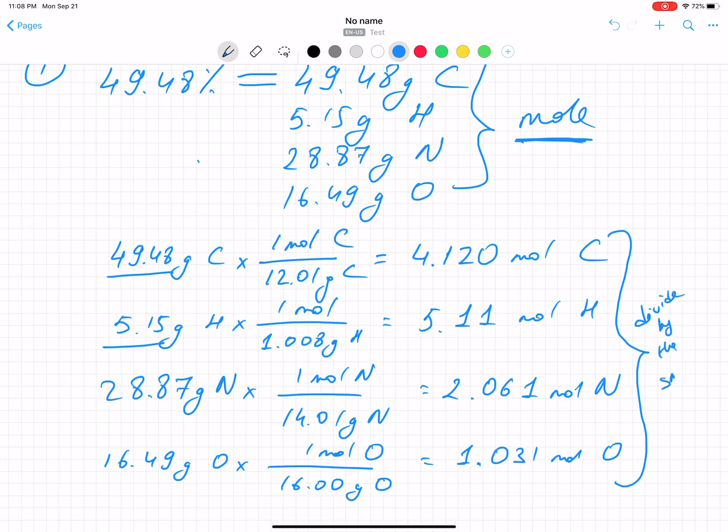Divide by the smallest. And here, the smallest one is oxygen. So what I need to do, I divide 4.120 over 1.031. I divide 5.11 by 1.031, and this by the same number 1.031. What you will get? The number of moles. Here is 1, 1 divided by 1. Here is 2 because when you divide those numbers. This is probably 5. And here, because those numbers are 4, you will get 4. This is empirical formula.